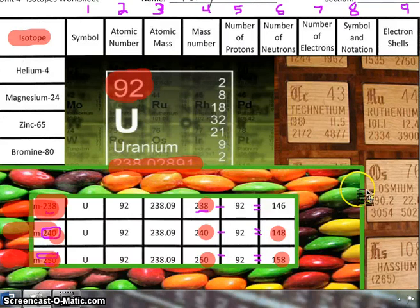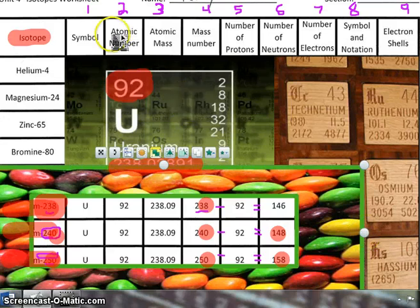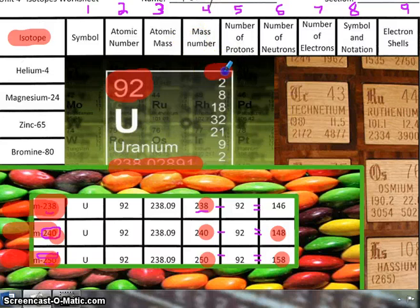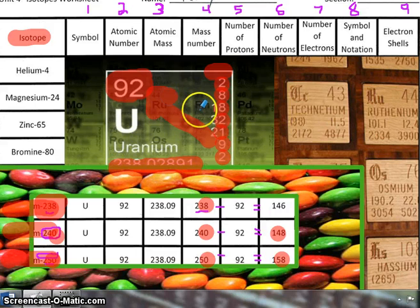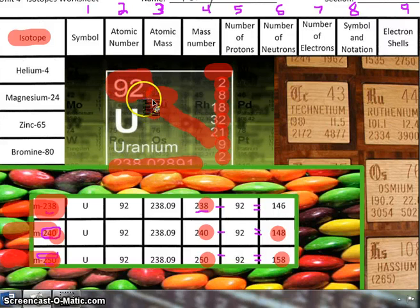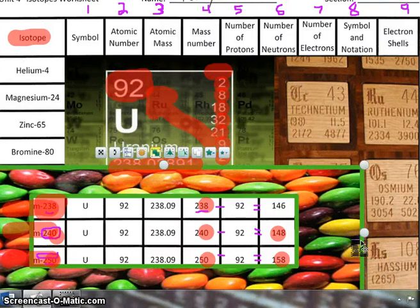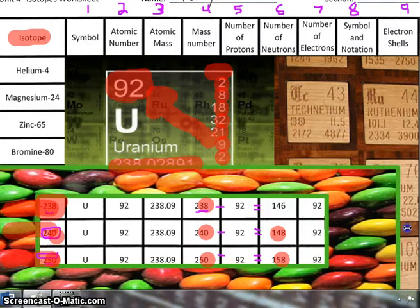Okay, let's move on to column 7, number of electrons. Now, there's an easy way and a hard way we mentioned in class. The hard way is to take all these electrons up here and add them up. So, 2 in level 1 plus 8 plus 18 plus 32 plus 21 plus 9 plus 2 equals 92. Okay, so they're going to equal 92. So that's the hard way.